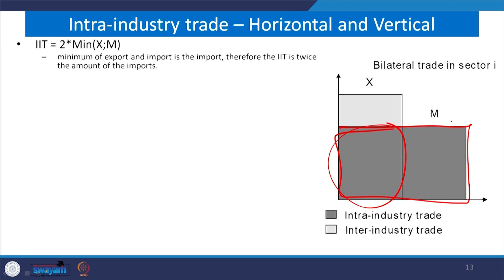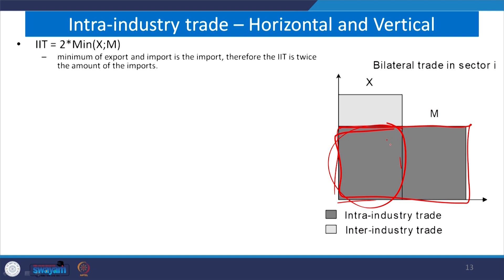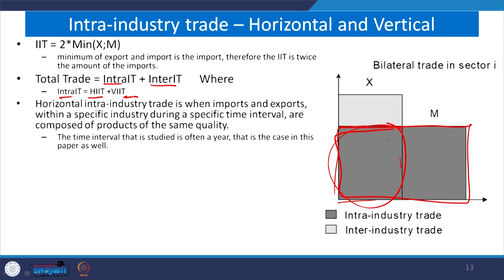IIT is nothing but twice the minimum of either export or import. Total trade equals intra-industry plus inter-industry trade, where intra-industry trade is composed of both horizontal and vertical intra-industry trade. Horizontal IIT is when imports and exports within a specific industry during a specific time period — generally one year — are composed of products of the same quality.